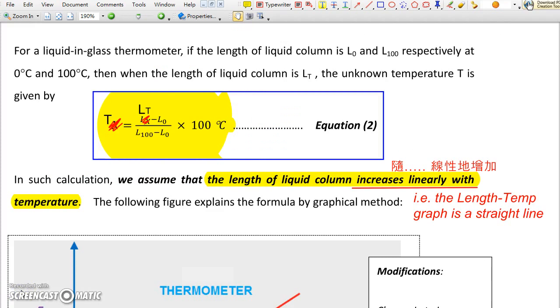On the right hand side of your book, you can see an equation, Equation number 2. The equation may tell you the unknown temperature T. At that time, the length of the liquid column is LT.